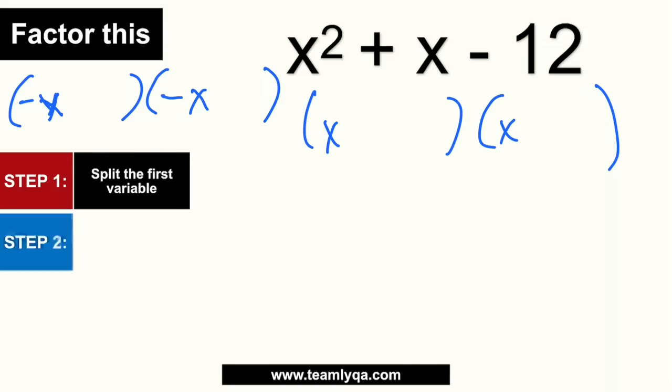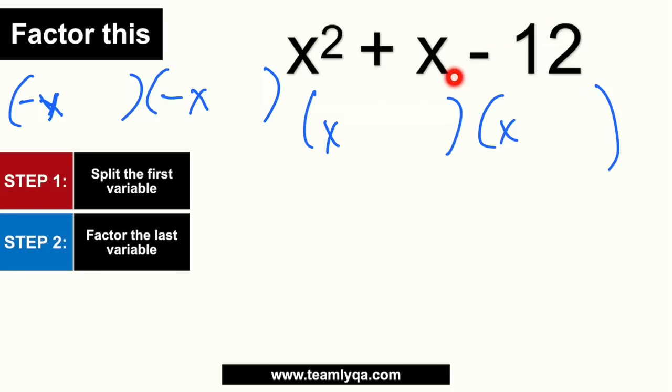Next, what we're going to do is you have to factor the last variable, which is negative 12. Here, the sign is very important. When we list down the factors, like what we did earlier, that would still be 12 and 1, then you have 6 and 2, and of course, 4 and 3. These are the pairs. But because the sign is negative, it means one side has to be negative. Whether this is negative and this is positive, or this is positive and this is negative.